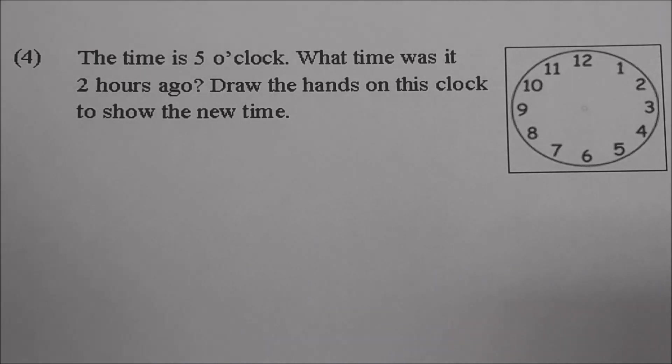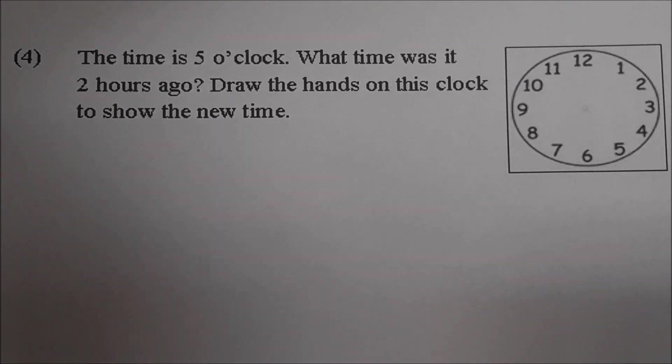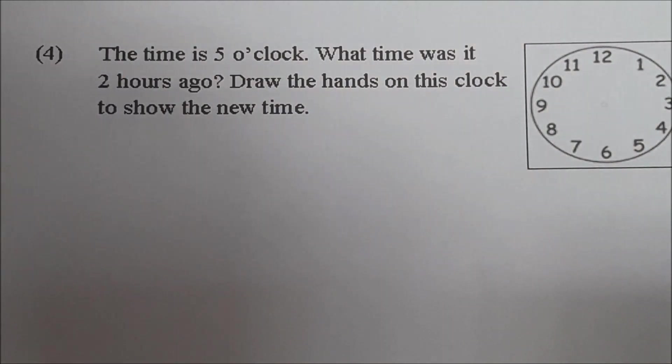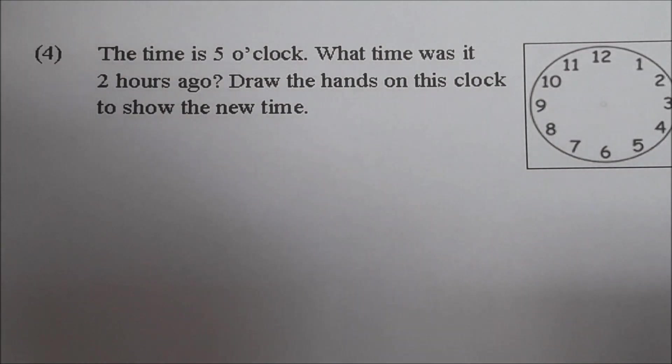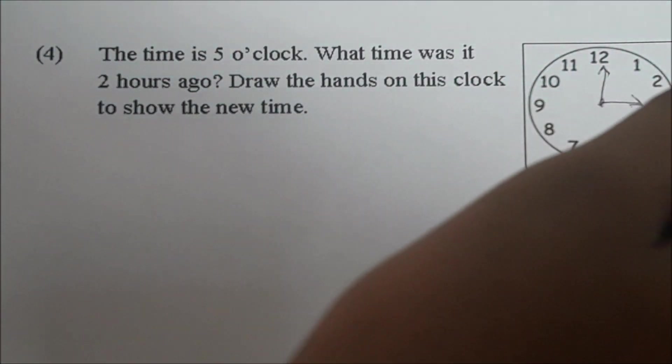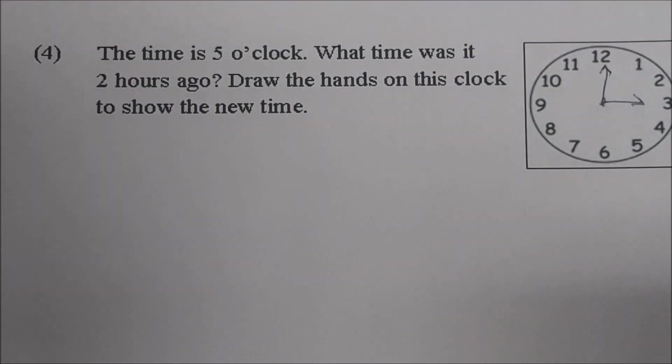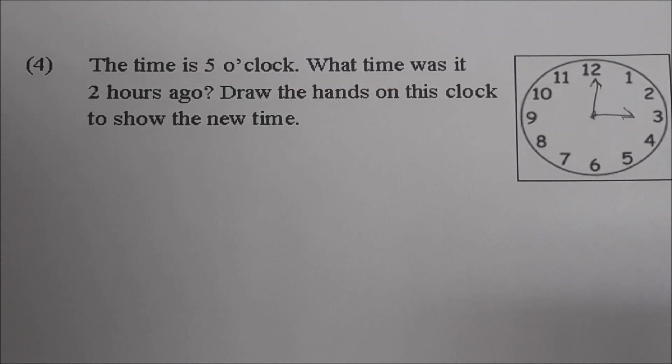Okay let's move on to number four. Read number four Sky. The time is five o'clock. What time was it two hours ago? Draw the hands on the clock to show the new time. Okay it is five o'clock but we want to know the time two hours ago. Go to the clock and let's see how you're going to work it Sky. What time would it be two hours ago? Go to five and count back two. Go to five. Count back two. Where do you end up? Three. So draw it in first now. Okay so you have the long hand pointing at twelve and the short hand pointing to three. Very good job Sky. Excellent work.